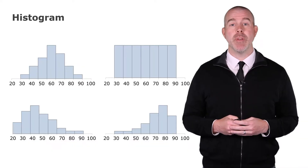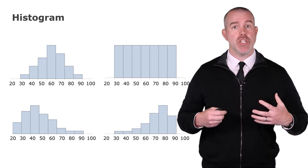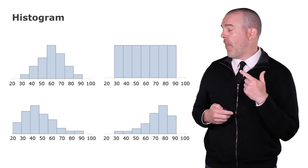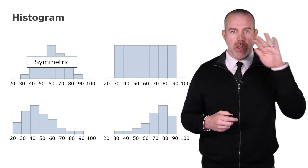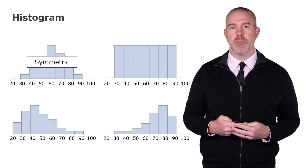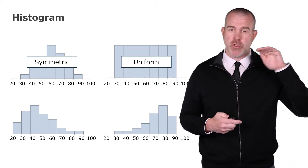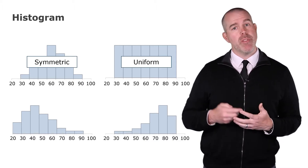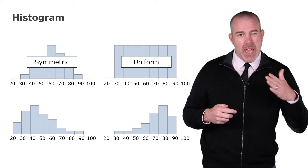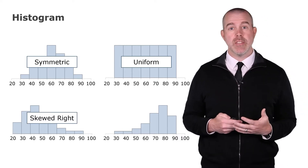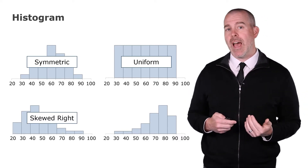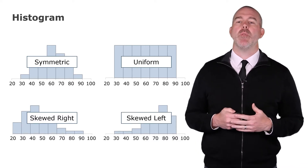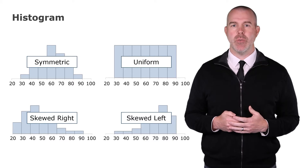One thing the histogram does is let us look at the distribution shape — how the variable is distributed. The first shape is symmetric, kind of bell-shaped. Then we have a uniform distribution where all intervals have about the same frequency. Then if most of the values are on the left and it distributes out to the right, we say that's right-skewed. And if most of the values are on the right with a few to the left, we say that is left-skewed.